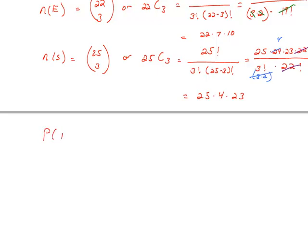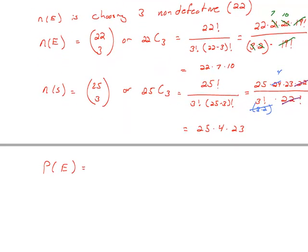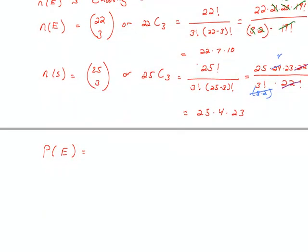So my probability of E is the number of ways that we can choose 3 that are non-defective, and right here we found that, 22 times 7 times 10, over the number of ways that we can choose 3 out of the box in general, 25 times 4 times 23. And now I just need to try to reduce this down as far as I can if that's possible.